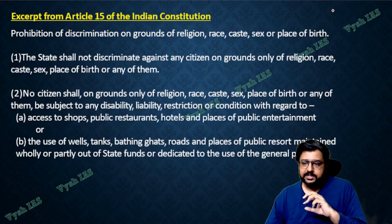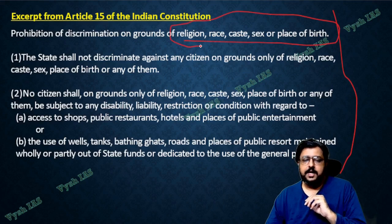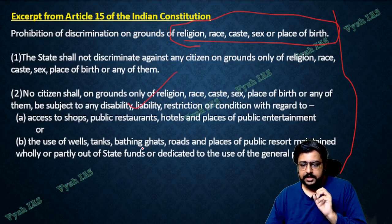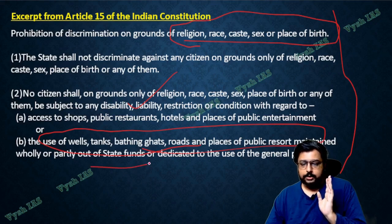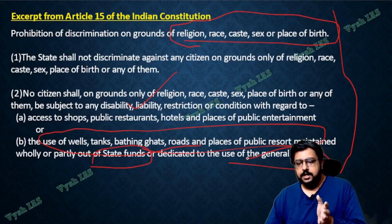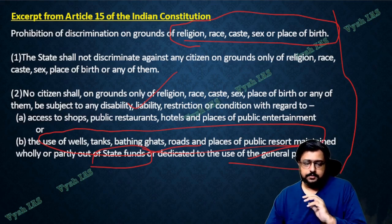Article 15 details have been given in this chapter — remaining articles you will study as different chapters are done. Discrimination based on these five things you have to know by heart: religion, race, caste, sex, or place of birth. Then some reservations can be given. Public places use should be completely equal — no discrimination — and it should be maintained wholly or partly out of state funds and dedicated to general public use. Nobody should say this is only for a particular religion or caste.